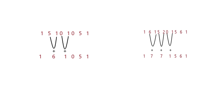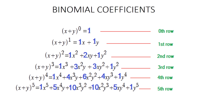Next is binomial coefficients. The binomial coefficients in the expansion of a binomial equation in two variables, say x and y, are obtained directly from Pascal's Triangle. For example, (x + y)^0 = 1, which is the entry of the 0th row. (x + y)^1 = 1x + 1y, where the coefficients of x and y, which are 1 and 1, are the entries of the 1st row.